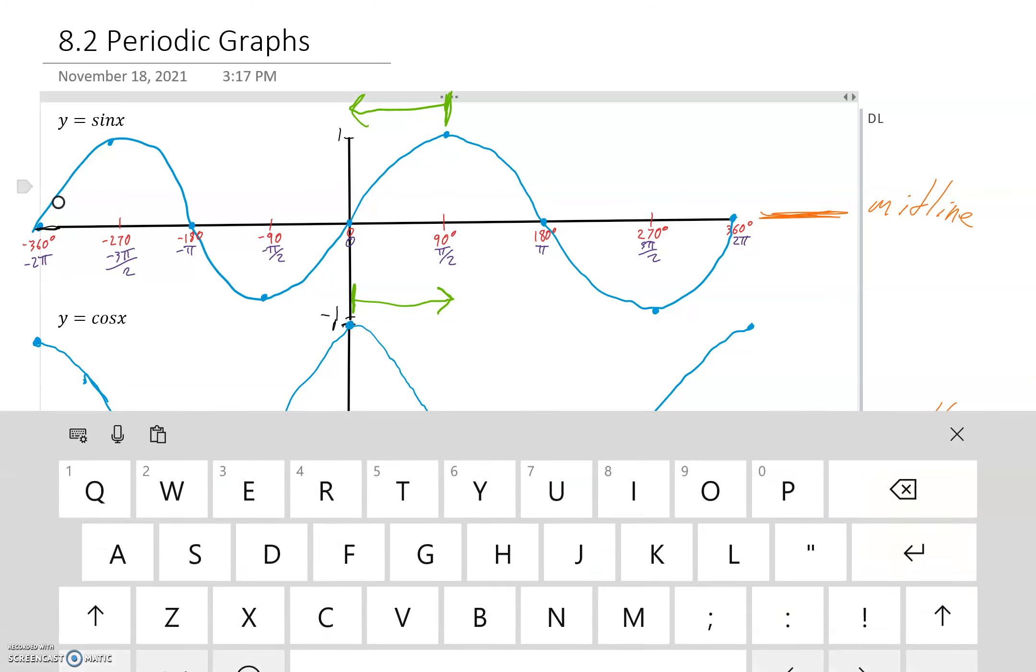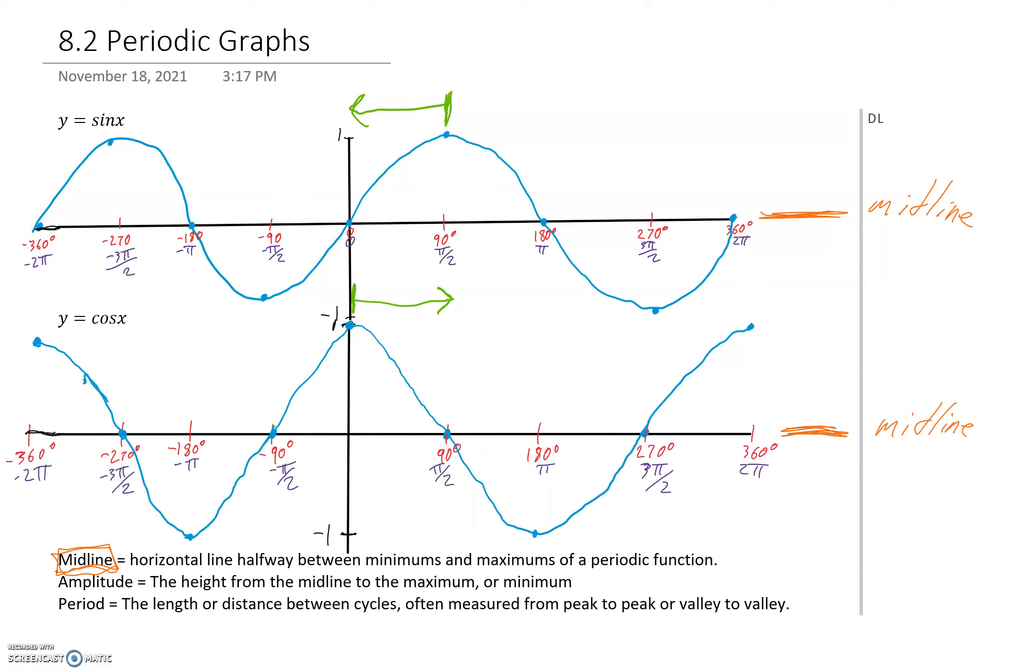We can also notice that the amplitude is the height from the midline to the max, or the midline to the minimum. So probably this is probably the easiest way to do it. Just go to the closest maximum, and just go with that. It could be the maximum, it could be the minimum. So we could also certainly go down this way. And that distance that it gives you is the amplitude.